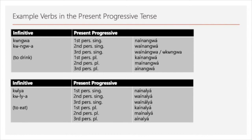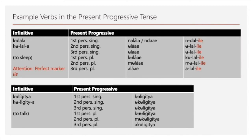The 'n' is in both cases the morpheme for the first person singular, and 'k' for the first person plural, and so on. Here are two other verbs: 'kulala' meaning 'to sleep' and 'kuligitia' meaning 'to talk'.